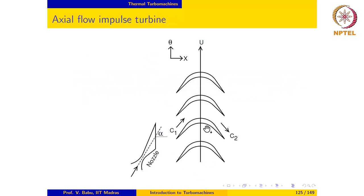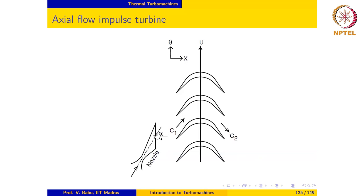An axial flow impulse turbine rotor looks like this: all enthalpy drop occurs in the nozzle located upstream of the rotor. The fluid comes out at high velocity, impinges on the blades, and simply changes direction in the rotor blade passage. The magnitude of relative velocity remains constant because it is an impulse machine — there is no change in enthalpy, hence no change in relative velocity, only a change in direction. Because absolute velocity at rotor inlet is very high, blade RPM tends to be quite high in an impulse turbine.